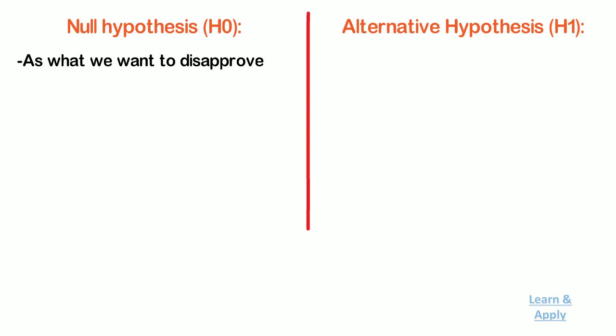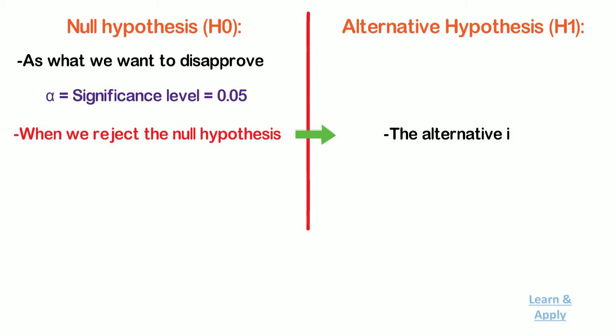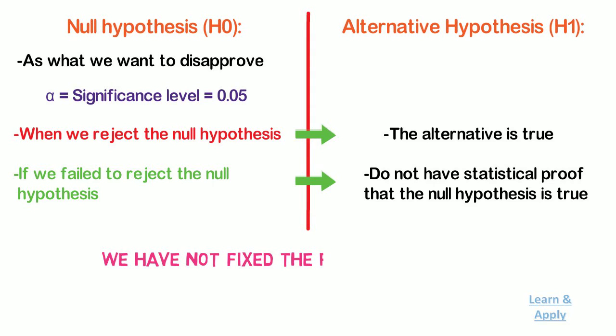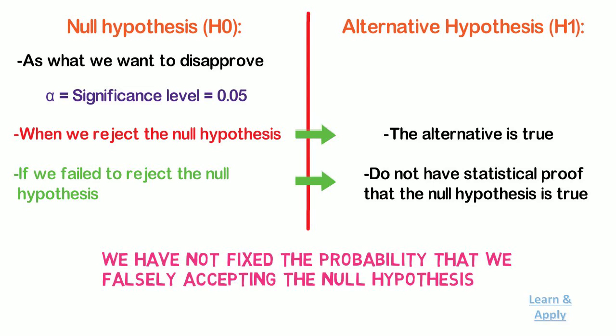The null hypothesis appears what we want to disprove. Because we fix the significance level to be small before the analysis, usually a value of 0.05 works well. When we reject the null hypothesis, we have statistical proof that the alternative is true. Conversely, if we fail to reject the null hypothesis, we do not have statistical proof that the null hypothesis is true. This is because we have not fixed the probability that we falsely accepting the null hypothesis to be small.